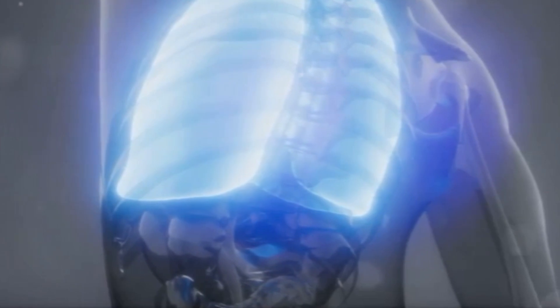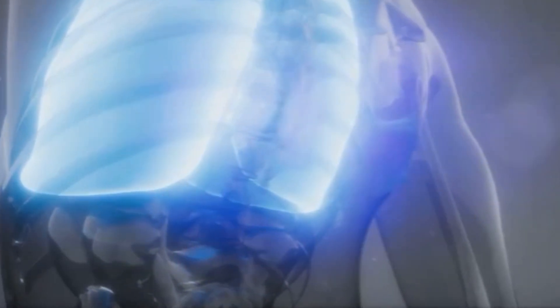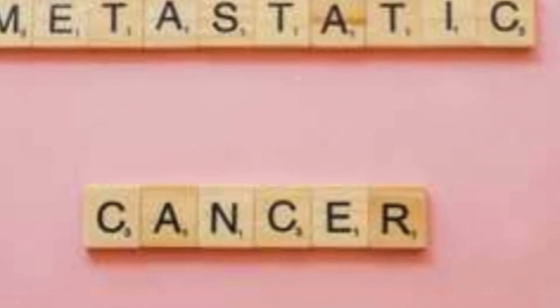Lung cancer starts in the cells of the lungs. These cells begin to grow uncontrollably, forming tumors that can interfere with lung function. It can grow and spread to other parts of the body.